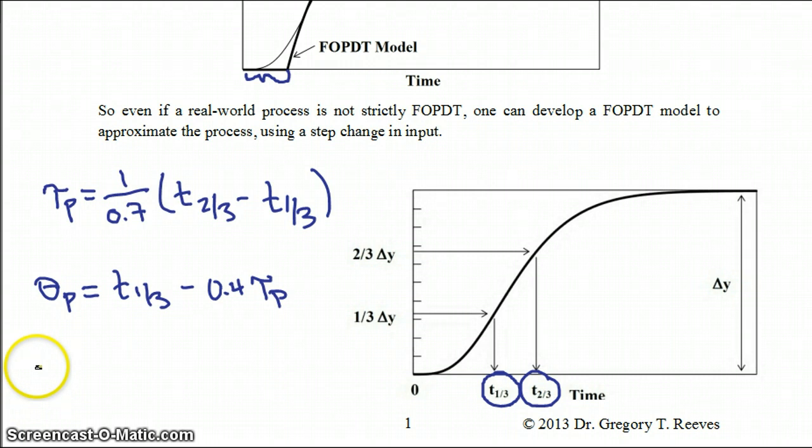Finally you need to know what your process gain is, and that's just as simple as how far does your new steady state deviate from your previous steady state divided by how much your step change in input was.